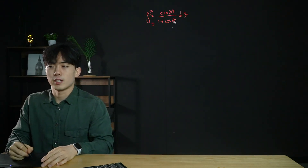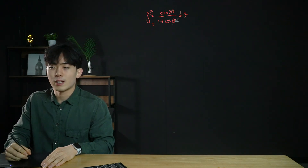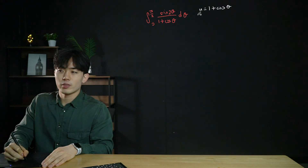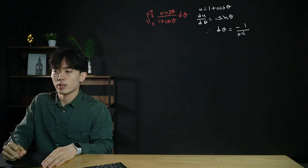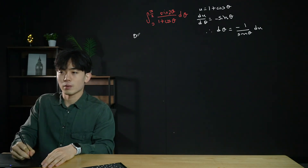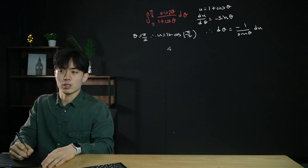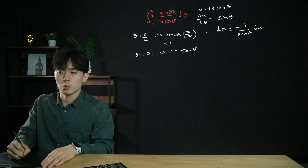The next example has limits, so we need to change the limits when we substitute. Let u = 1 + cos θ. Then du/dθ = minus sin θ, so dθ = minus 1/sin θ · du. Updating the limits: when θ = π/2, u = 1 + cos(π/2) = 1 + 0 = 1; when θ = 0, u = 1 + cos 0 = 1 + 1 = 2.